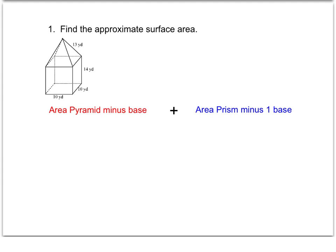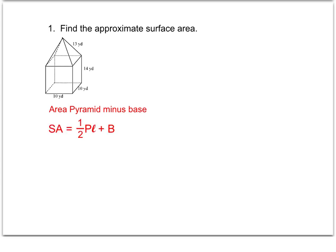I'm going to start by finding the area of the pyramid, and we're always going to start with the formula. The formula for the surface area of a pyramid is one-half perimeter times slant height plus the base. And remember, we want to subtract out the base, so I'm just going to cross that out. That's what the B represents — the area of the base of the pyramid.